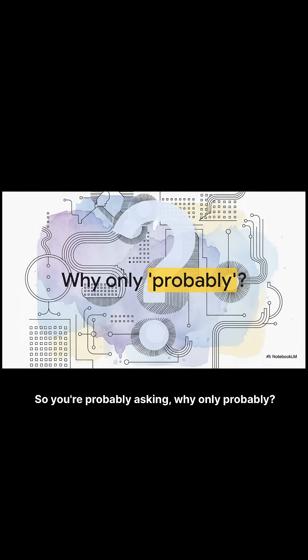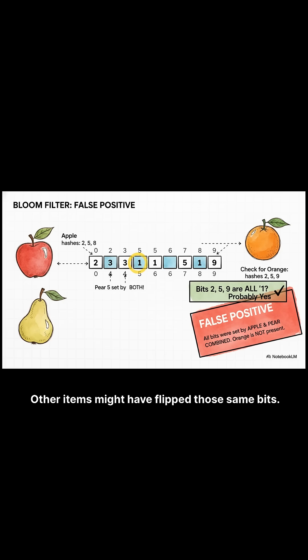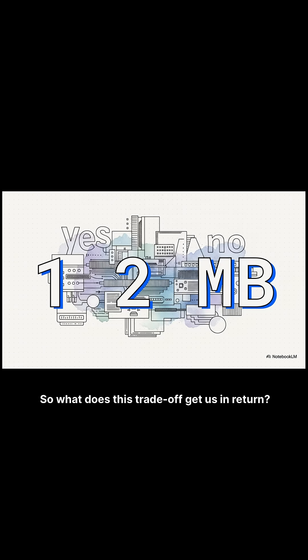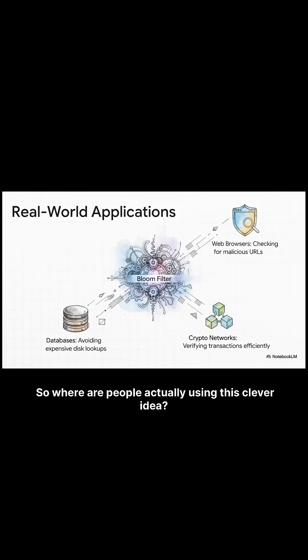Why only probably? This is the trade-off — it's called a false positive. Other items might have flipped those same bits. So what does this trade-off get us in return? Look at this number: 1.2 megabytes. That's all you need to track a million items with just a one percent false positive rate.